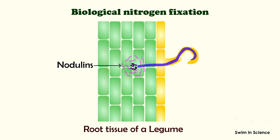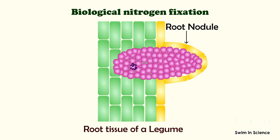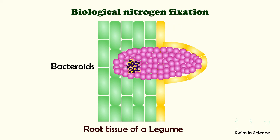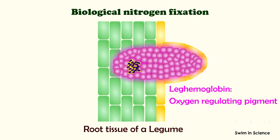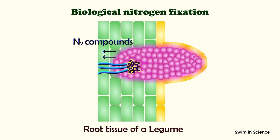Proteins called nodulins cause the root cortex cells to divide, leading to the formation of root nodules. Inside the cortex, rhizobia divide and morphologically change into bacteroids. Nodules become pink inside as leghemoglobin is produced. Nodules also develop vascular tissue that transports nitrogen compounds to the plant and organic carbon compounds from the plant to the bacteroids.